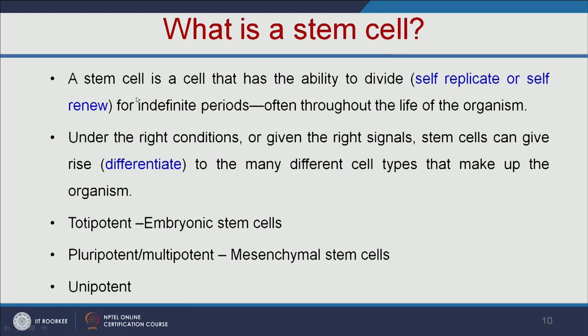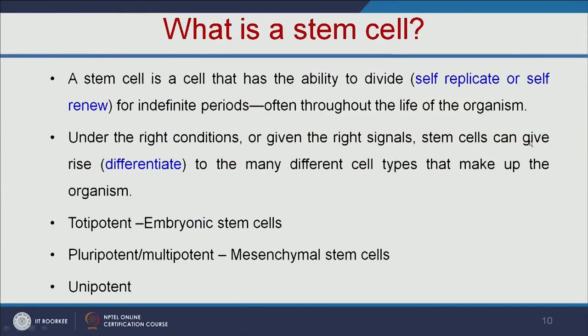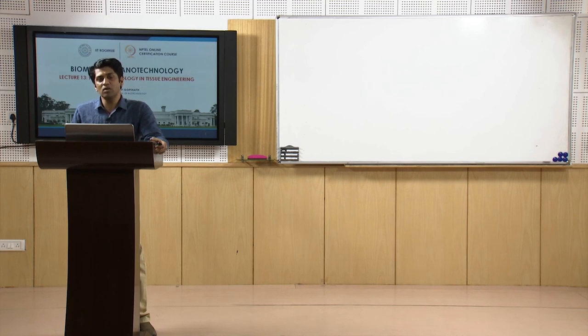A stem cell has the ability to divide for indefinite periods, often throughout the life of the organism. In simple terms, you can think of it like a seed — from the seed you get the plant, from the plant you get the flower, and again you get the fruit and seed. Similarly, stem cells can differentiate into any kind of cell. Under the right conditions or given the right signals, stem cells can give rise to many different types of cells. For example, inducing stem cells with suitable growth factors can convert them into liver cells or kidney cells — that is called differentiation.